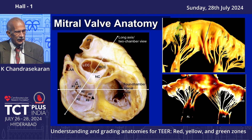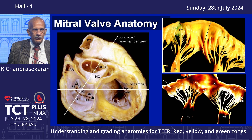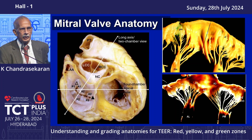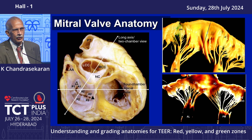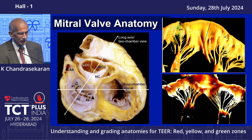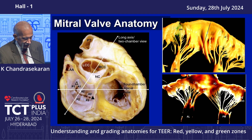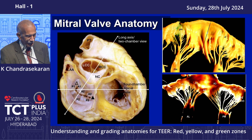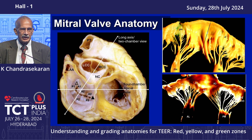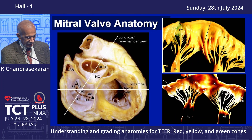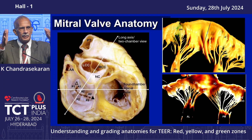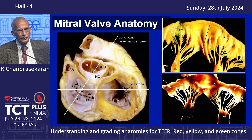For transcatheter edge-to-edge repair of the mitral valve, the key thing is you need to know the mitral valve anatomy thoroughly. This anatomical picture, if you rotate it counterclockwise about 30 to 40 degrees, will look like what the surgeon sees. The mitral valve is not a circular structure — that's number one. The mitral annulus is not uniform — that's number two. Third, the aorto-mitral portion, called the curtain leaflet area, is almost flat or even slightly concave, because the commissions come in at an angle.